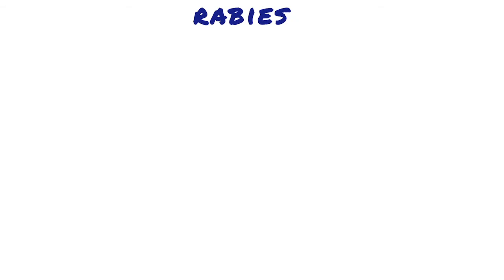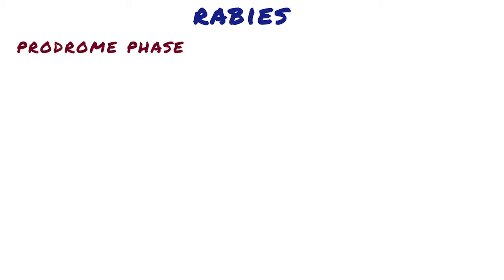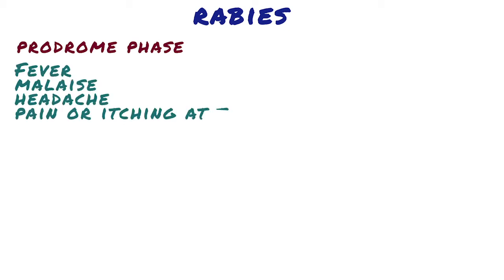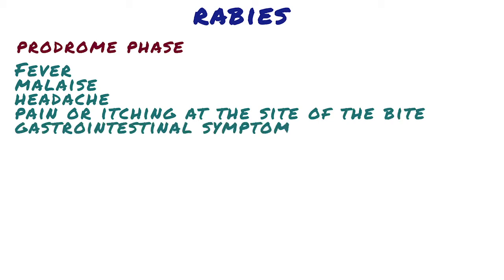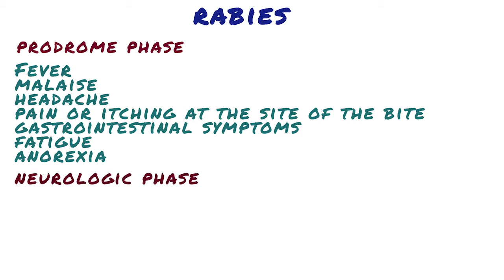After a long but highly variable incubation period, the prodrome phase of rabies ensues. The patient has symptoms such as fever, malaise, headache, pain or itching at the site of the bite, gastrointestinal symptoms, fatigue, and anorexia. The prodrome usually lasts 2 to 10 days, after which the neurologic symptoms specific to rabies appear.